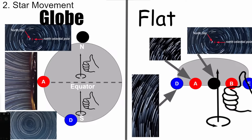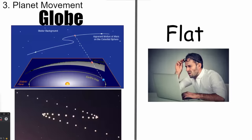On star movement: both models agree you'd see circular star patterns at the North Pole. But at the equator, the globe predicts stars move east to west in a straight line, while flat Earth predicts a curve. At the South Pole, the globe predicts circular motion in the opposite direction of the North Pole, while flat Earth cannot predict this. We observe exactly what the globe model predicts.